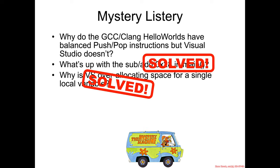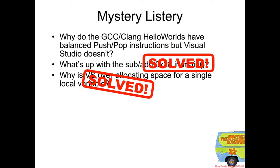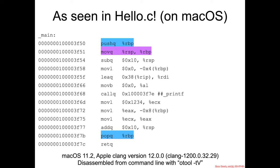Now we can investigate our final mystery: why do the GCC and Clang Hello Worlds have balanced push/pop instructions but Visual Studio doesn't? We saw this assembly before, and it's now shown with a new color coding convention — blue for balanced and lavender for linkage.